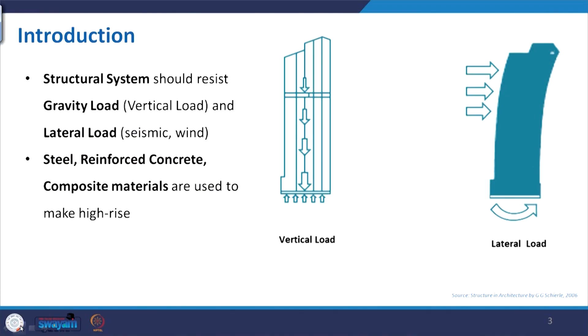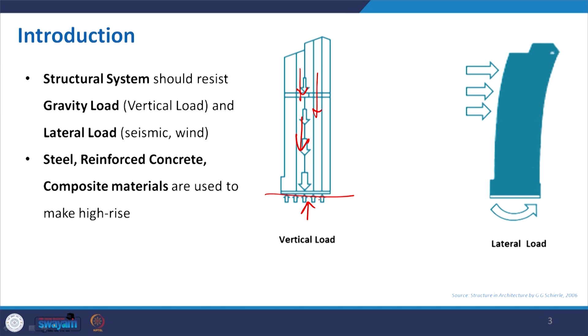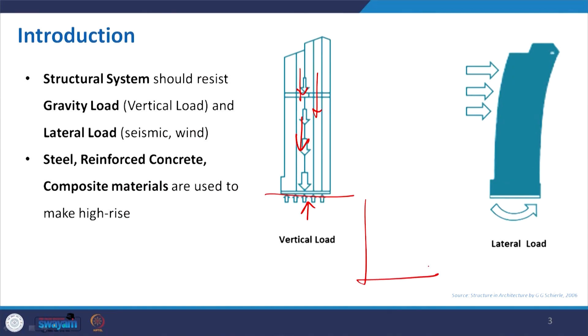In the introduction, we discussed in the previous lecture that mainly two kinds of loads act on a building. One is the vertical load or gravity load — you can see that all the dead loads of the building are transferred to the foundation, which provides a reaction. This is common for all buildings, even single-storey ones. But when you think of increasing height, the lateral movement of a building increases due to wind pressure, and we have already discussed how wind pressure increases with height.